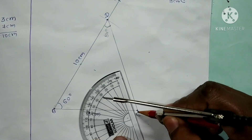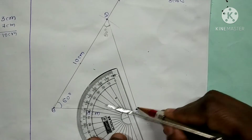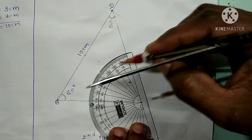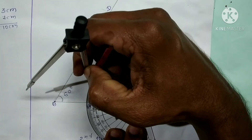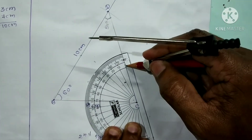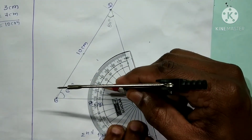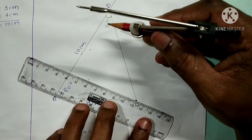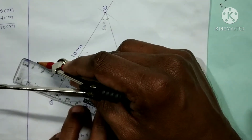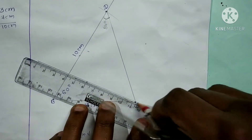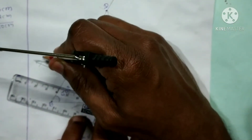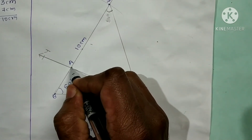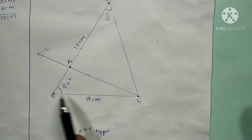Same way, we have to draw an angle of 50 degrees at point C. This is point C, and we keep the protractor like this. At 50 degrees — this is 0, 10, 20, 30, 40, 50 — so this point is 50 degrees. Then we have to draw one ray from point C and give the name CY. This is the point E, and we got the required triangle A, B, C.